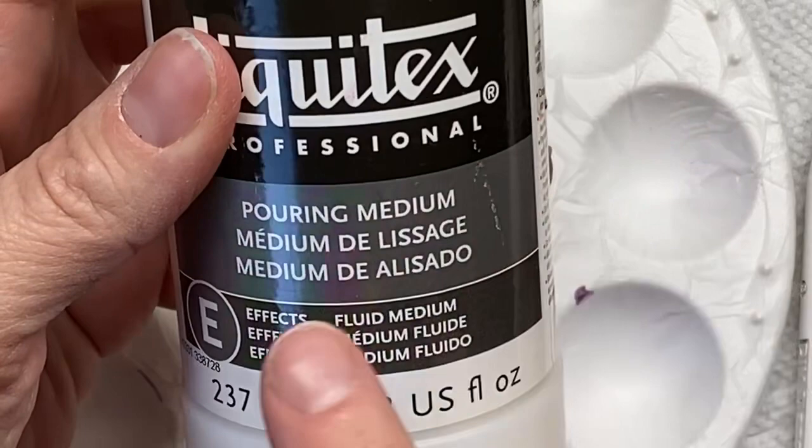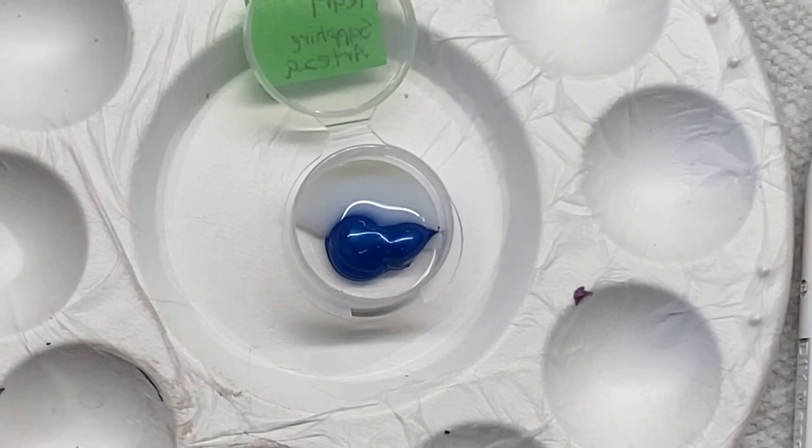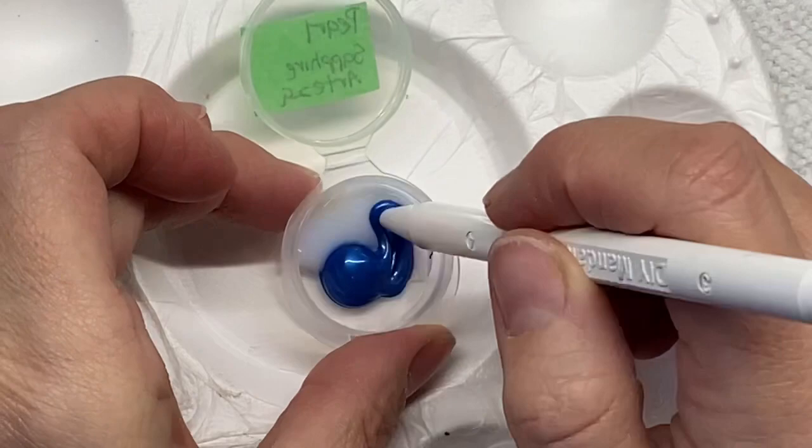So I use this Liquitex pouring medium. This gives me the best results for the type of look I want to achieve. It's about approximately a 50-50 ratio.